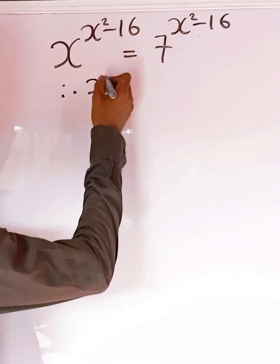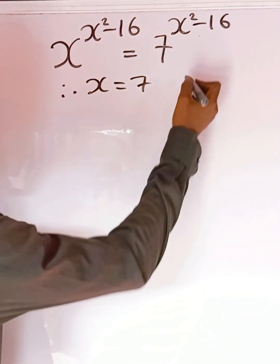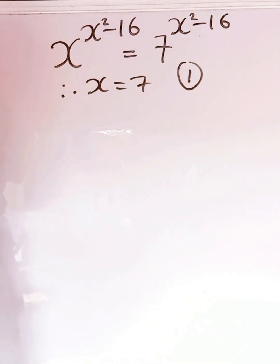So therefore, one of the glaring solutions is x equals 7. That's solution 1, that's the first solution.